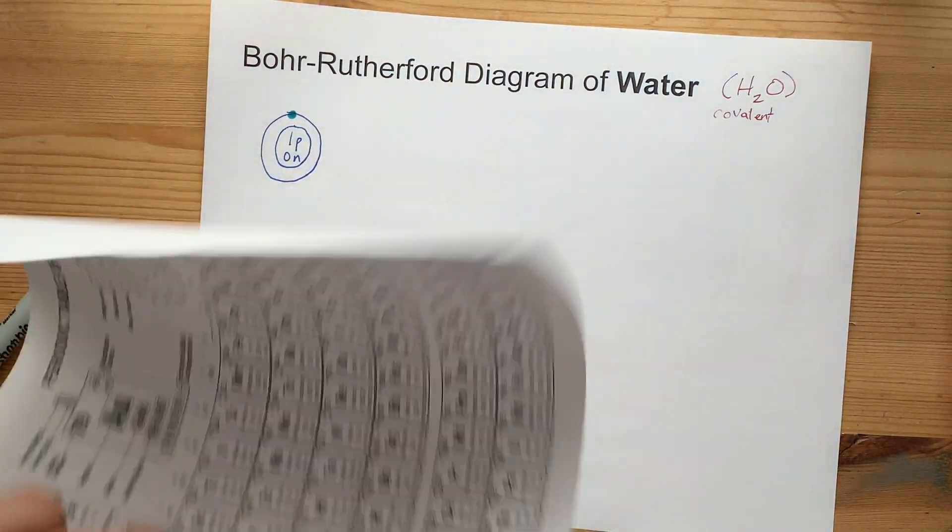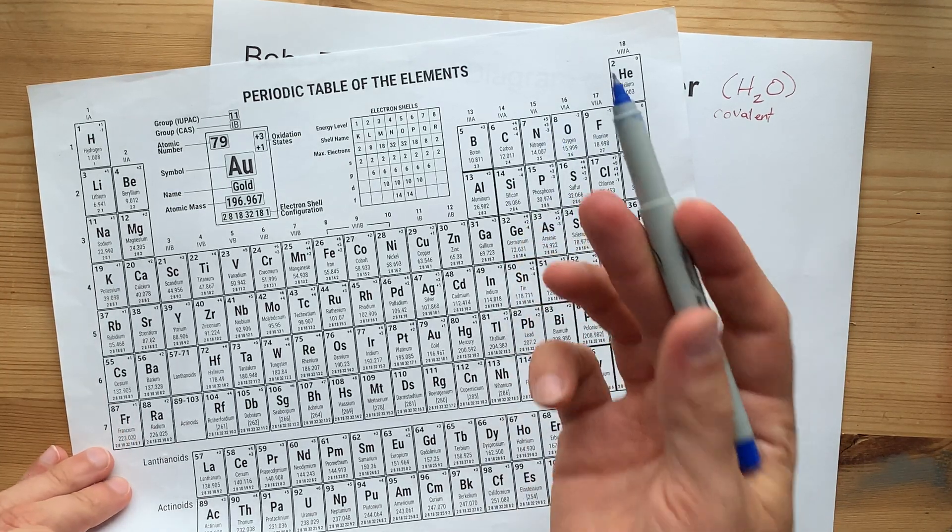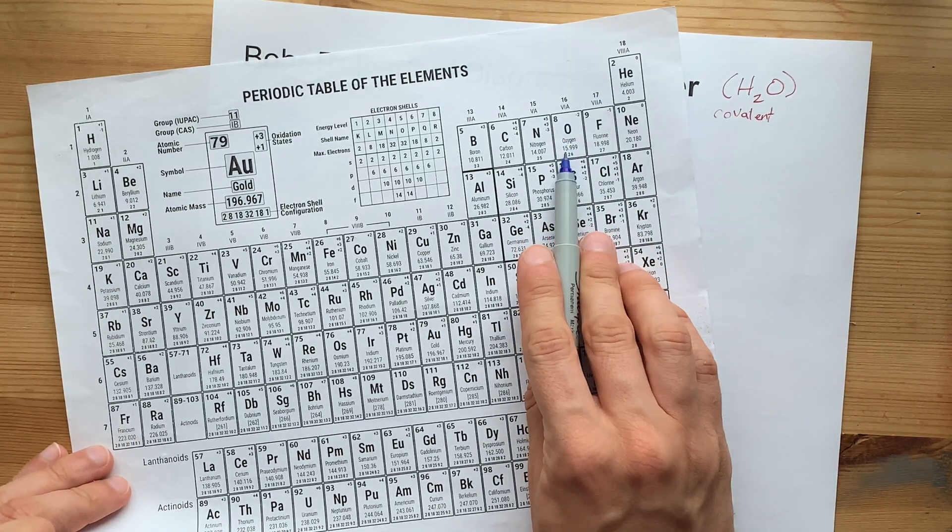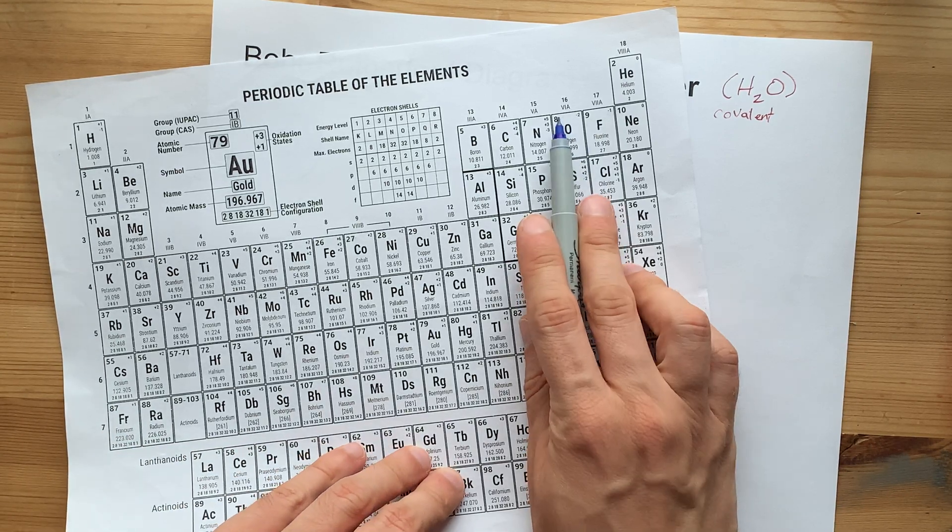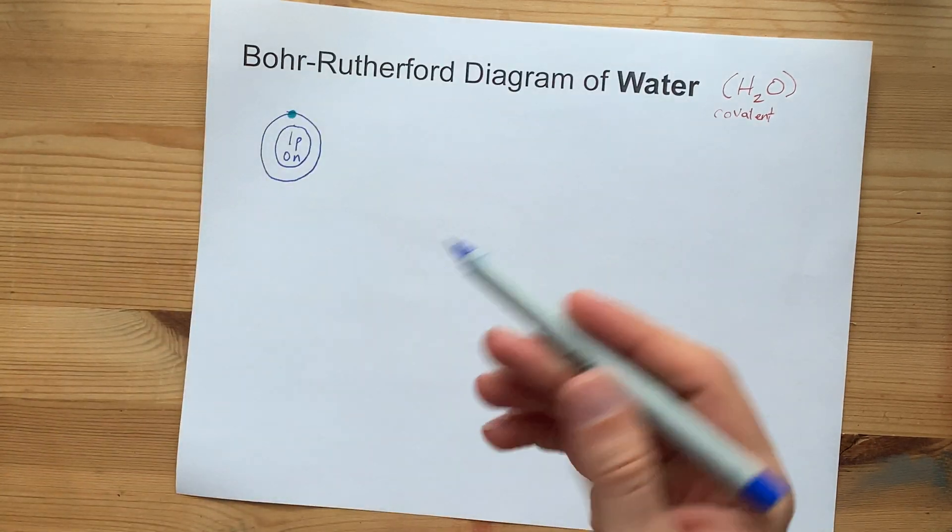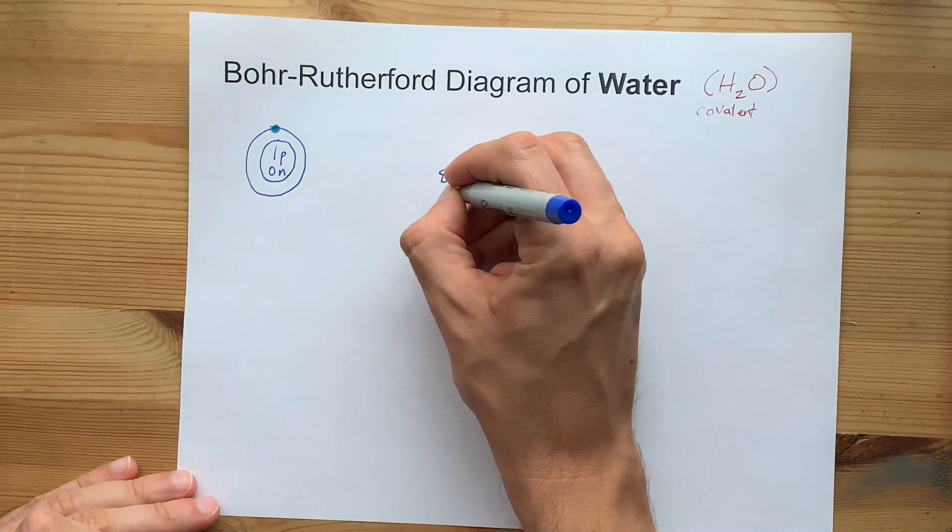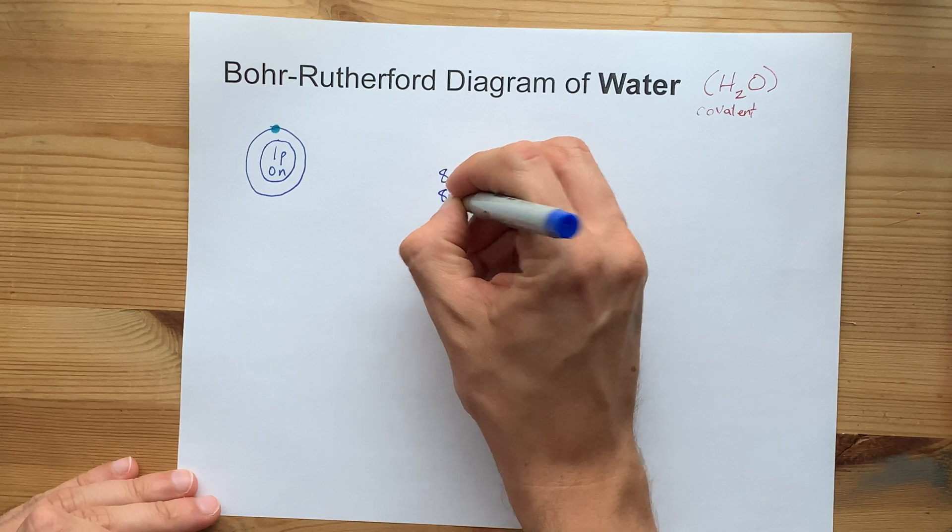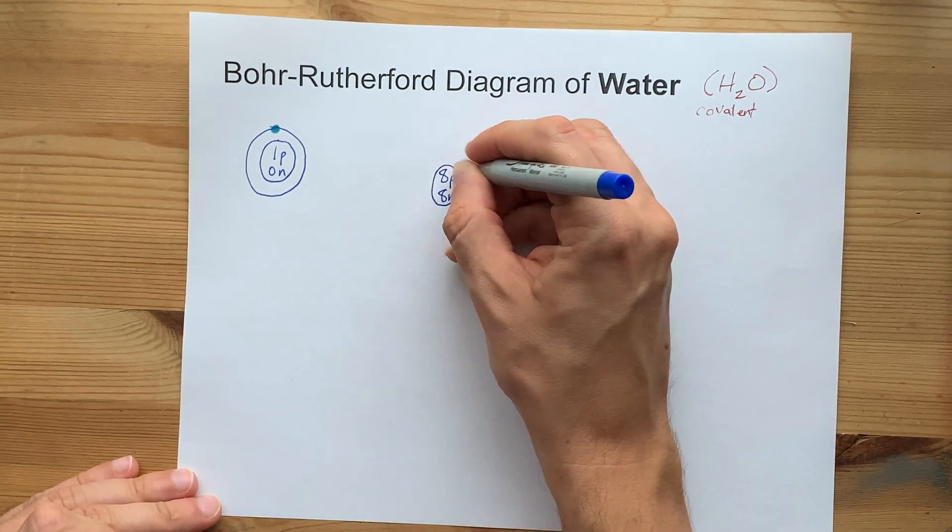Now, oxygen is a different story. Oxygen has an atomic number of eight, that means it's eight protons, and a mass of approximately 16. 16 minus eight tells you that there's eight neutrons as well. So I'm going to write eight protons, eight neutrons. See how those add to 16? That's the nucleus.